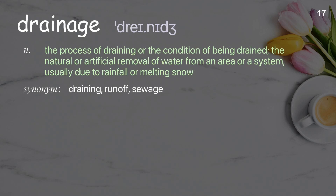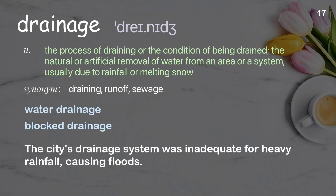Drainage: the process of draining or the condition of being drained; the natural or artificial removal of water from an area or a system, usually due to rainfall or melting snow. Examples: water drainage; blocked drainage. The city's drainage system was inadequate for heavy rainfall, causing floods.